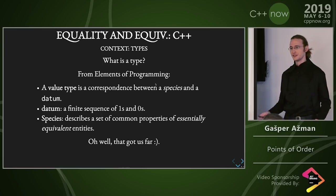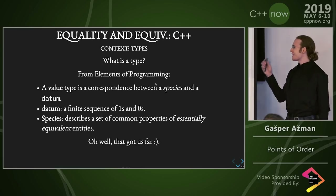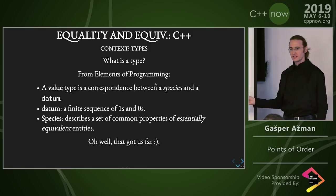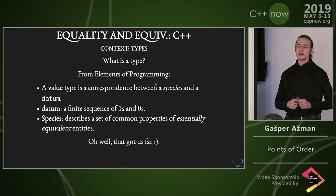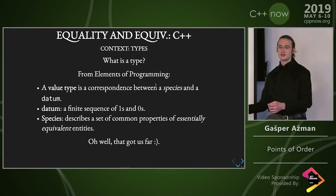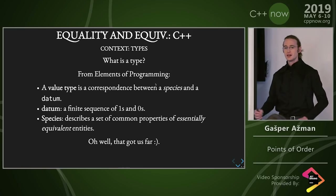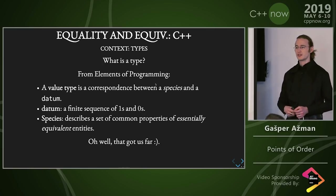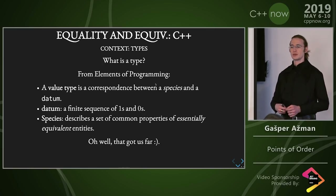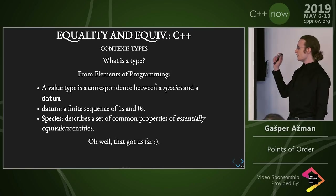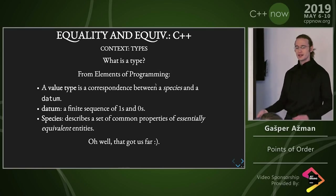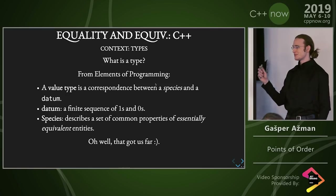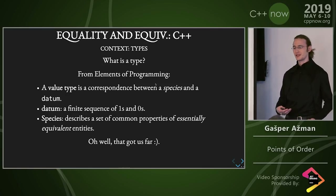Now we need to define two terms. A datum is a finite sequence of ones and zeros — he sort of hand-waves the far parts of objects if you've read Elements of Programming. Let it be a finite sequence of ones and zeros, possibly interspersed by things that don't matter. And a species is more like a platonic thing — but we're not dealing with platonic things. We're dealing with very concrete things based on our problem domain. I can't tell you what your problem domain is, but you sure as hell know, or you better.